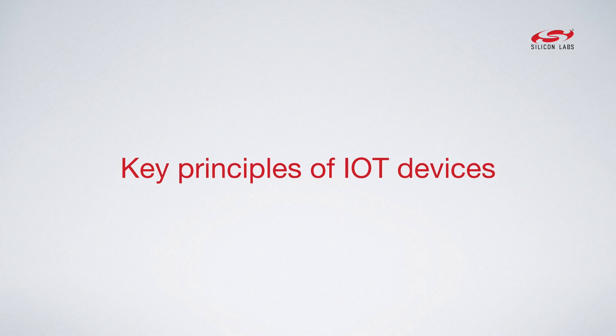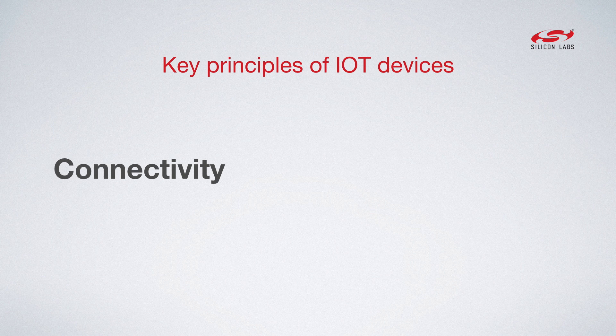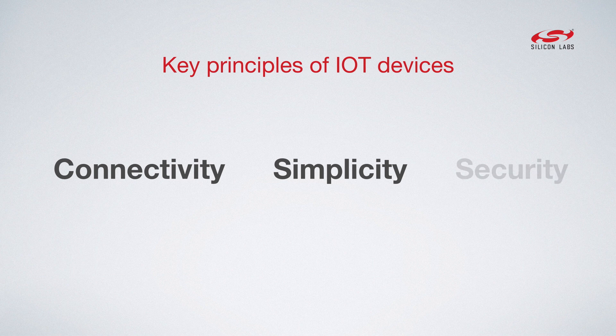So what are the underlying principles around these connected devices? Well, the first is obviously connectivity of devices — these are going to be devices on your home network or on the Internet. The second principle has to be simplicity: how do we make this easy to use for every consumer? And the third has to be security. If I'm putting these devices on my home network, if I'm putting these on the Internet, how do I make sure I'm using them and my family's using them and not everyone else?